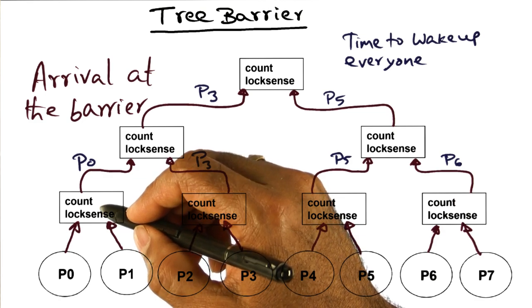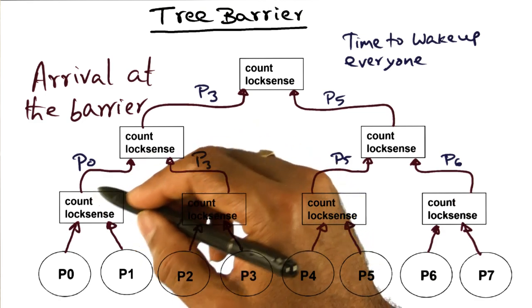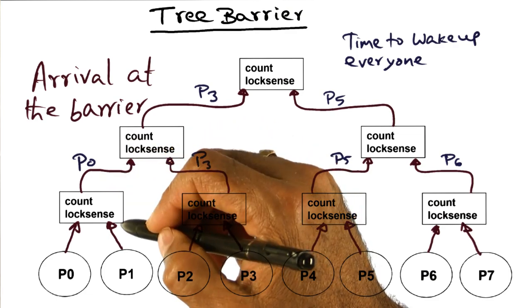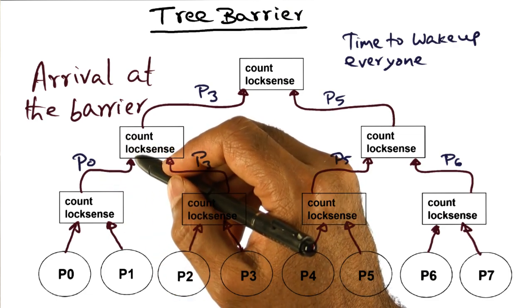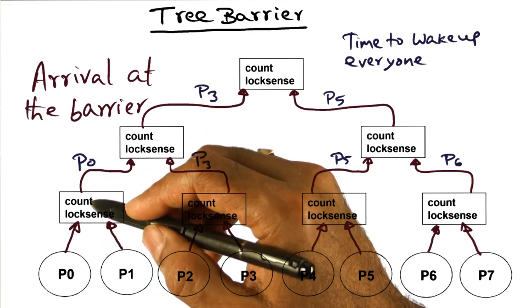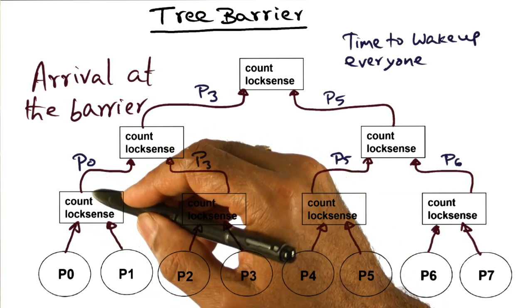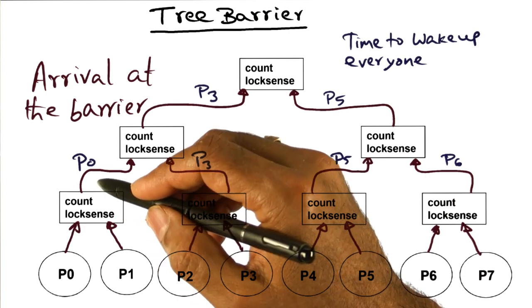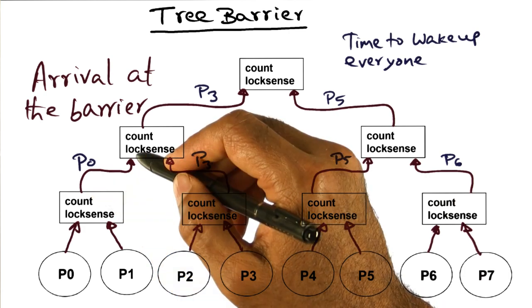The first thing it's going to do is, it's going to say, do I have a parent? If I have a parent, what I have to do is, I have to recurse. Do the same thing to the next level. So the algorithm is decrement count, and see if the count becomes zero. If the count has become zero, then you recurse if the parent is there.